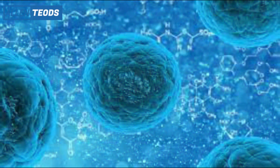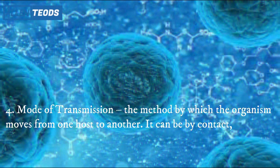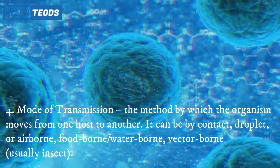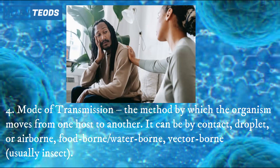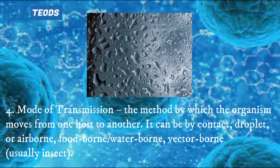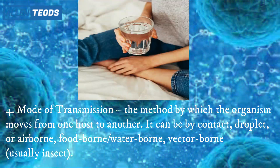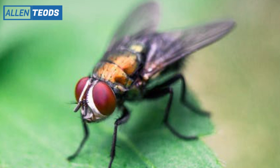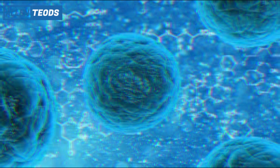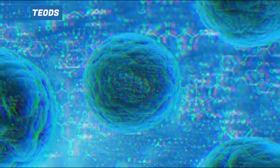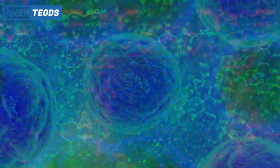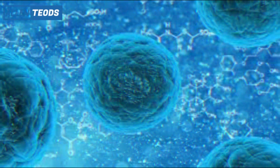Number four is the mode of transmission — the way by which the organism moves from one host to another. It can be by contact, droplet, or airborne; foodborne or waterborne; or vectorborne, usually by insects. These are the ways bacteria, viruses, or diseases can be transferred to other persons or animals.